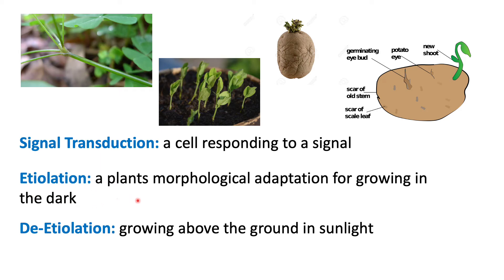Etiolation is a plant's morphological adaptation for growing in the dark. When we think about plants that grow in the dark, one of the most famous examples is a potato. If we leave a potato in a dark spot for a long period of time, we'll notice tiny sprouts — these tiny little shoots — starting to grow on the potato.